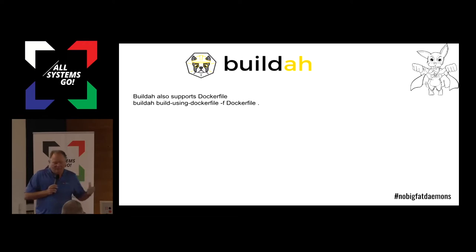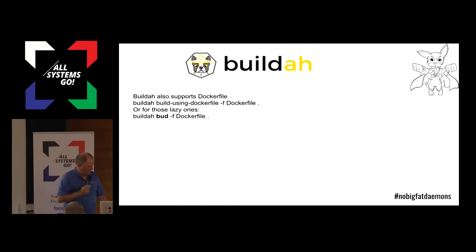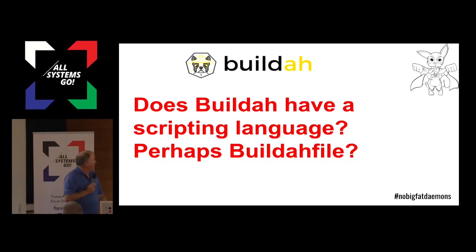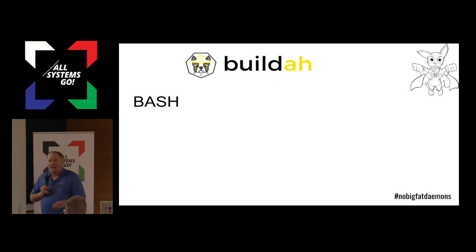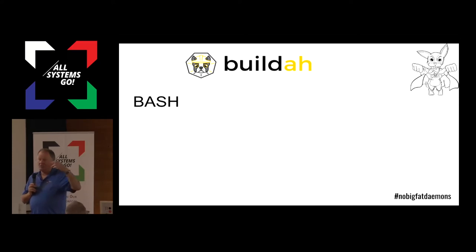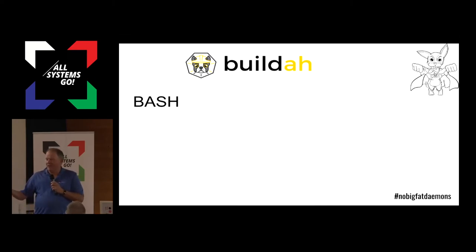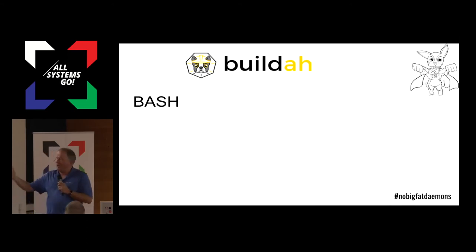Of course we support Dockerfile because that's what everybody wants. We have builder build using Dockerfile. We use a shorter name because we're lazy engineers, and we call it BuilderBud — and of course Anheuser-Busch does not have any rights on that name. BuilderBud supports Dockerfiles. I also wrote a big scripting language for it — I wrote Bash. So you can actually build containers using Bash. The really interesting thing about how we run and build containers is there's no daemon. The way we share information is using a file system, and you can share storage between containers and between processes — Podman, Builder, CRI-O, all these different tools can use it. Anyway, that's Builder as quickly as I can do it. Thanks.